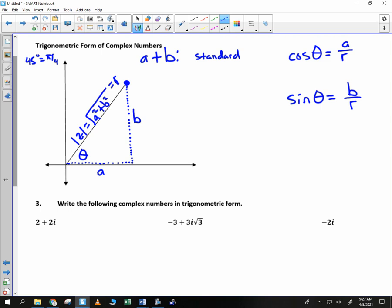So therefore, if I simply multiply both sides by r, I get r cosine of theta is equal to a. And furthermore, if I multiply both sides by r here, I get r sine of theta is equal to b.